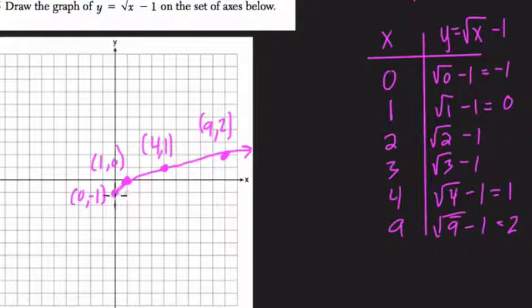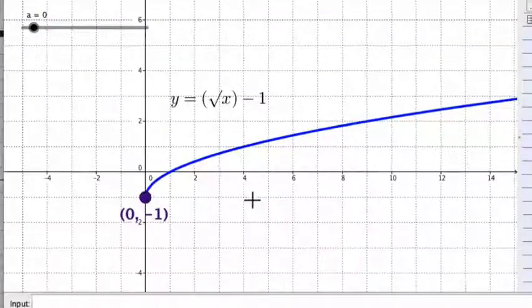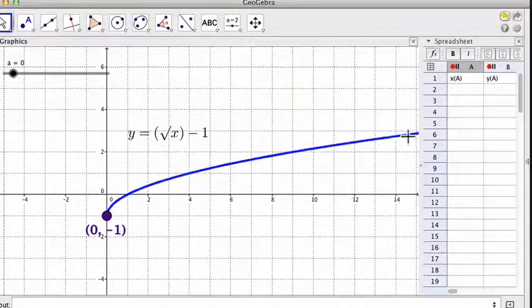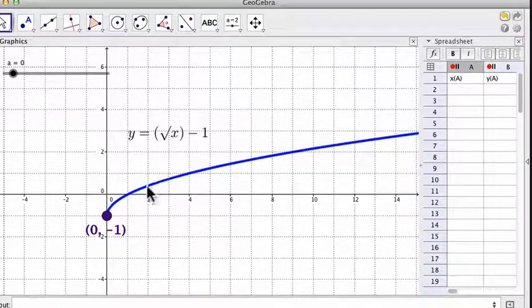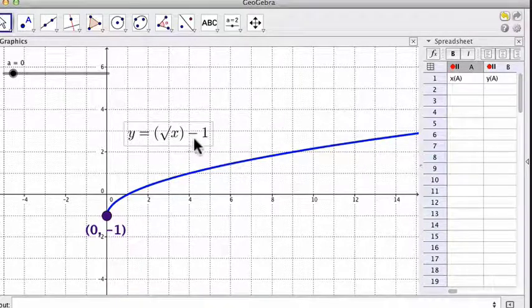What happens to the other points, though? Why does the graph seem to stop right here? So let me pull up a different program, GeoGebra, to help you see this. So in this program, this is the blue line, the blue curve, which is the function we're trying to plot, y equals the square root of x minus 1.